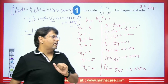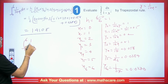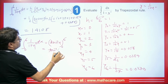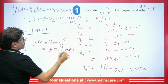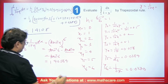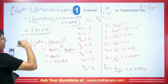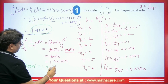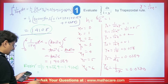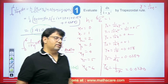Sometimes in exams they ask for the exact value and the error. The exact value is found by integrating 1/(1 + x²) from 0 to 6, which gives [tan⁻¹(x)] from 0 to 6, equal to tan⁻¹(6) − tan⁻¹(0). tan⁻¹(0) is 0, so the exact value is tan⁻¹(6), which from the calculator equals 1.40564. The approximate value is 1.4108. The error is the modulus of (exact minus approximate): |1.40564 − 1.4108| = 0.0052. This is how you can easily solve these types of questions.